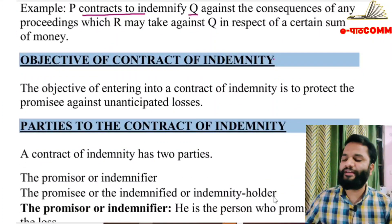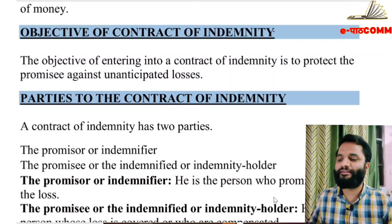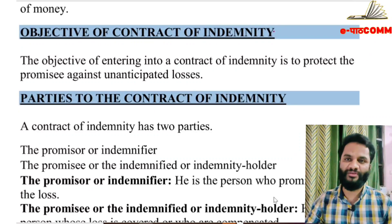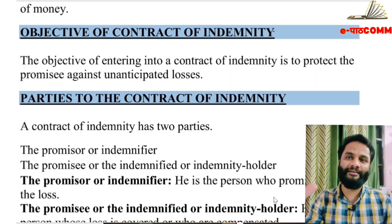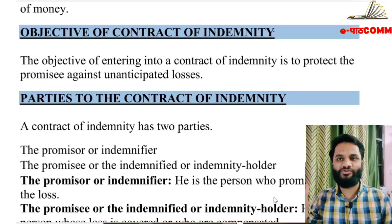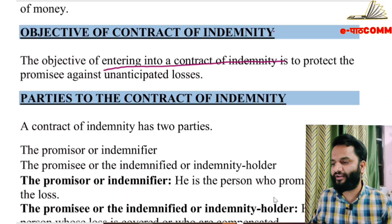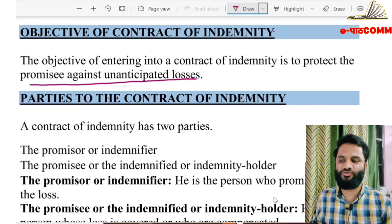The objective of entering into a contract of indemnity is to protect the promisee against unanticipated losses. The promisor promises that if any unanticipated loss occurs in the future, he will bear that loss. That is the objective of the contract of indemnity.